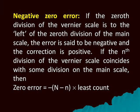Negative zero error: If the zeroth division of the vernier scale is to the left of the zeroth division of the main scale, the error is said to be negative and the correction is positive. If the nth division of the vernier scale coincides with some division on the main scale, then zero error equals minus (N − n) × least count, where N is the total number of vernier scale divisions.